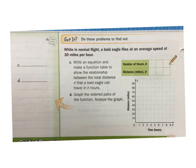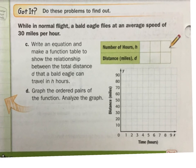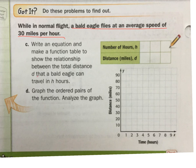Let's try one of these. In normal flight, a bald eagle flies at an average speed of 30 miles per hour. Write an equation and make a function table to show the relationship between the total distance D and the number of hours flown.